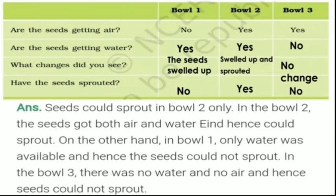Next answer: Gopal's mother tied the chana in a damp cloth so that the seeds could get both water and air. That is why she tied the chana in damp cloth — so that seeds could get both water and air.